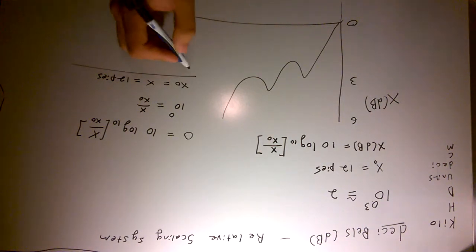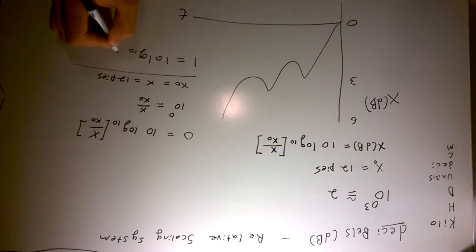Let's evaluate it at one just for fun. So one equals ten log base ten x over x naught. One divided by ten is one tenth. Raise both sides to the ten power, so you have ten to the point one equals x over x naught. Now we can see that our number of pies is not going to be 12 anymore, it's going to be x naught times ten to the one, whatever that works out to be.